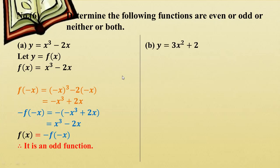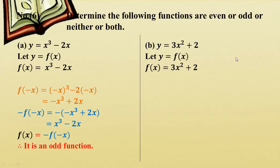Now we are going to look at y equals 3x² plus 2. Let's take a look at this squared function. We compute f(-x): minus x squared is x squared, so f(-x) equals 3x² plus 2. Also checking minus f(x) equals minus 3x² minus 2.